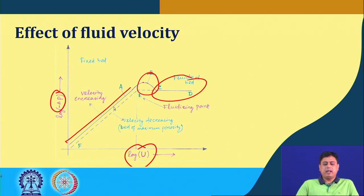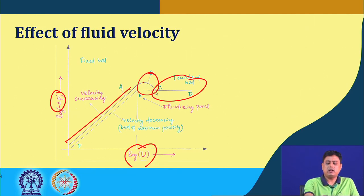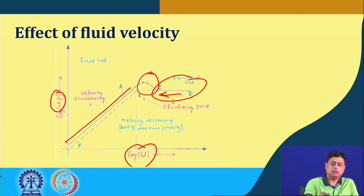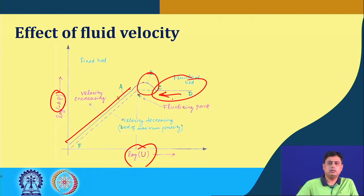If we come back on the same path — we went from the start to point A by increasing velocity — further increments lead to point B, then point C, after which bed expansion is complete and pressure drop remains unaltered till point D. Now if we decrease the superficial velocity from that stage, it follows the path D to C, then to E instead of going through path B. So it follows the E-to-F path on decreasing velocity.